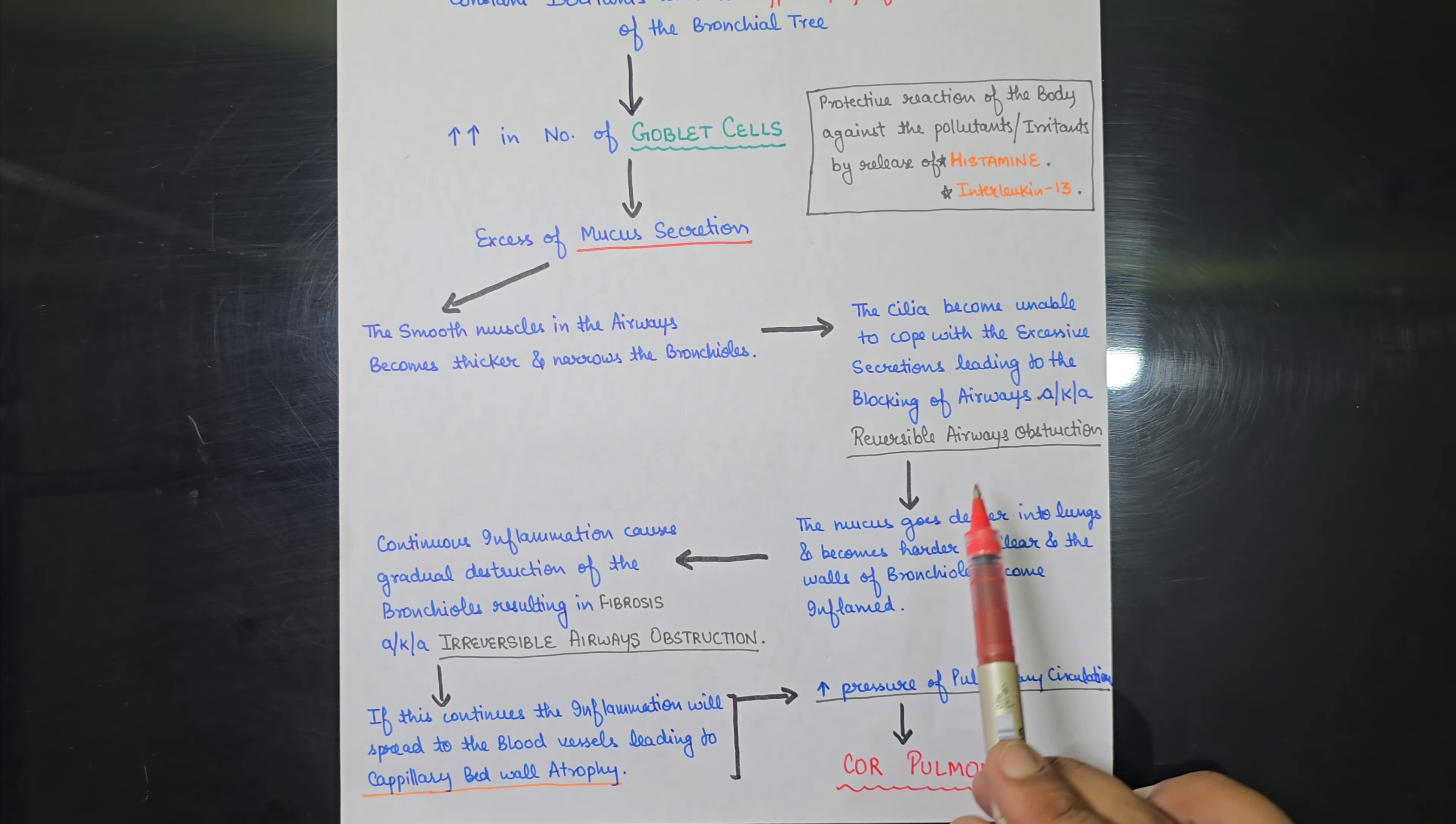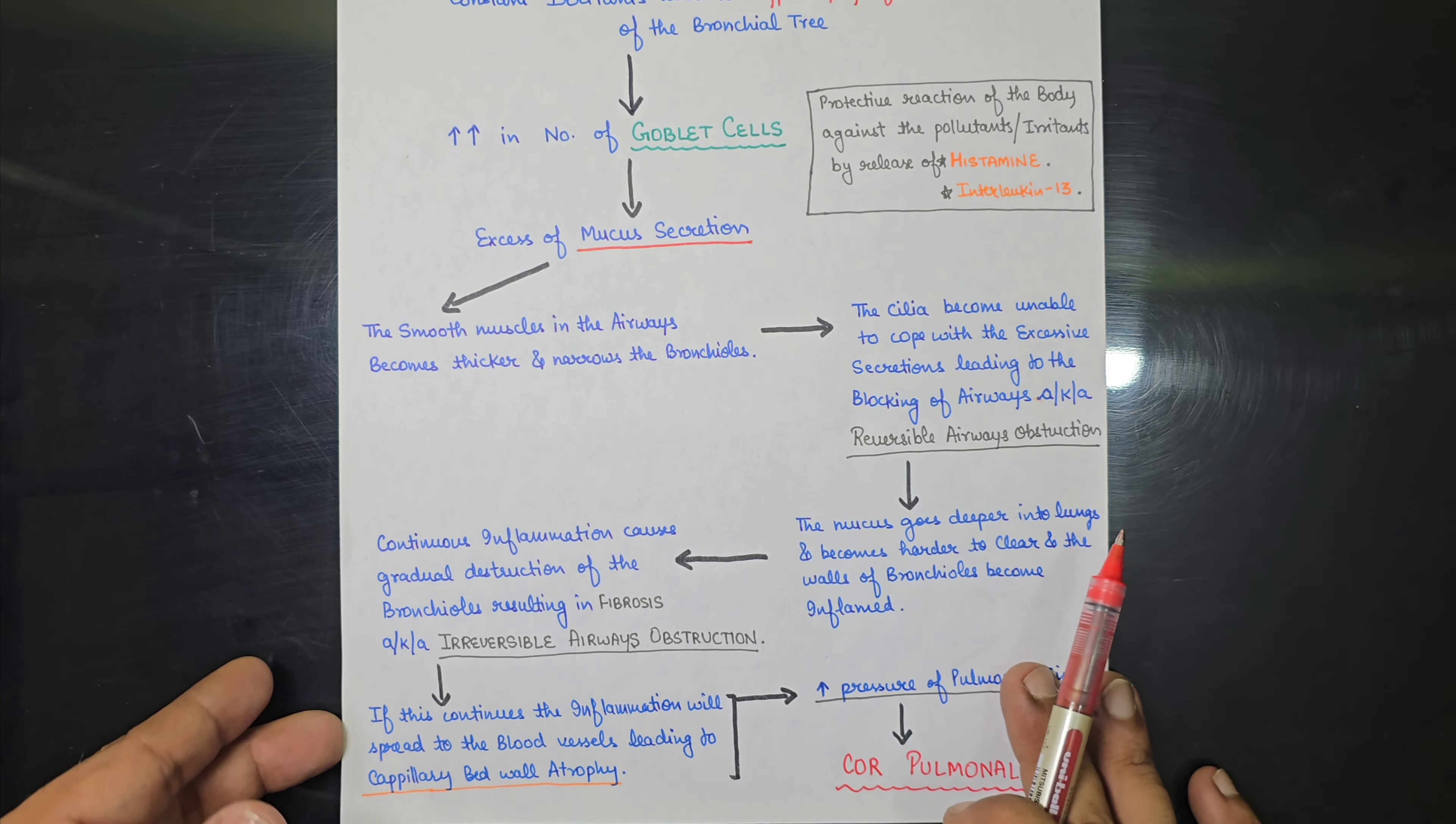So up till this point it is reversible. But once the inflammation goes on for a long time, it will lead to fibrosis. And after this fibrosis, there is irreversible airways obstruction. And if this continues, the inflammation will spread to the blood vessels and that will be leading to capillary bed wall atrophy. And after capillary bed wall atrophy, the pressure of the pulmonary circulation will increase. And in the later stages of the disease, it will lead to cor pulmonale or as you can say, right-sided heart failure.